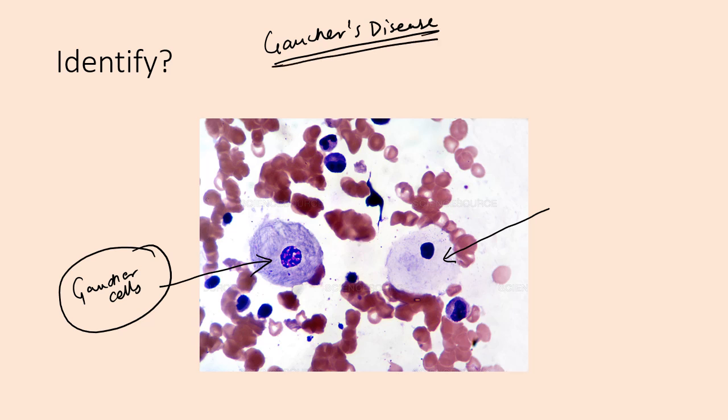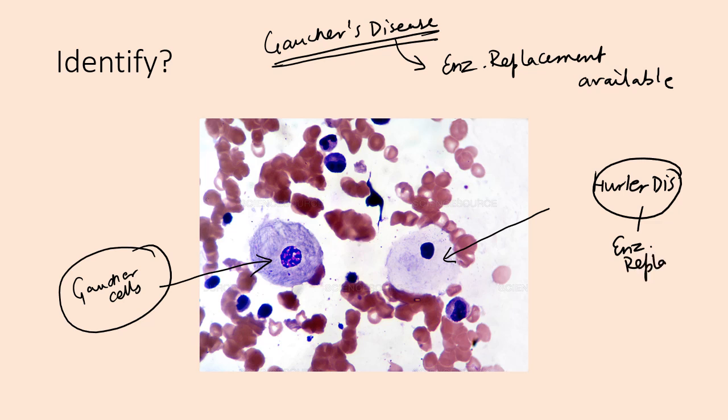Gaucher's disease: enzyme replacement is available. Just remember, Gaucher's disease enzyme replacement is available, as well as for Pompe's disease and Hurler's disease. Hurler disease also enzyme replacement is available.